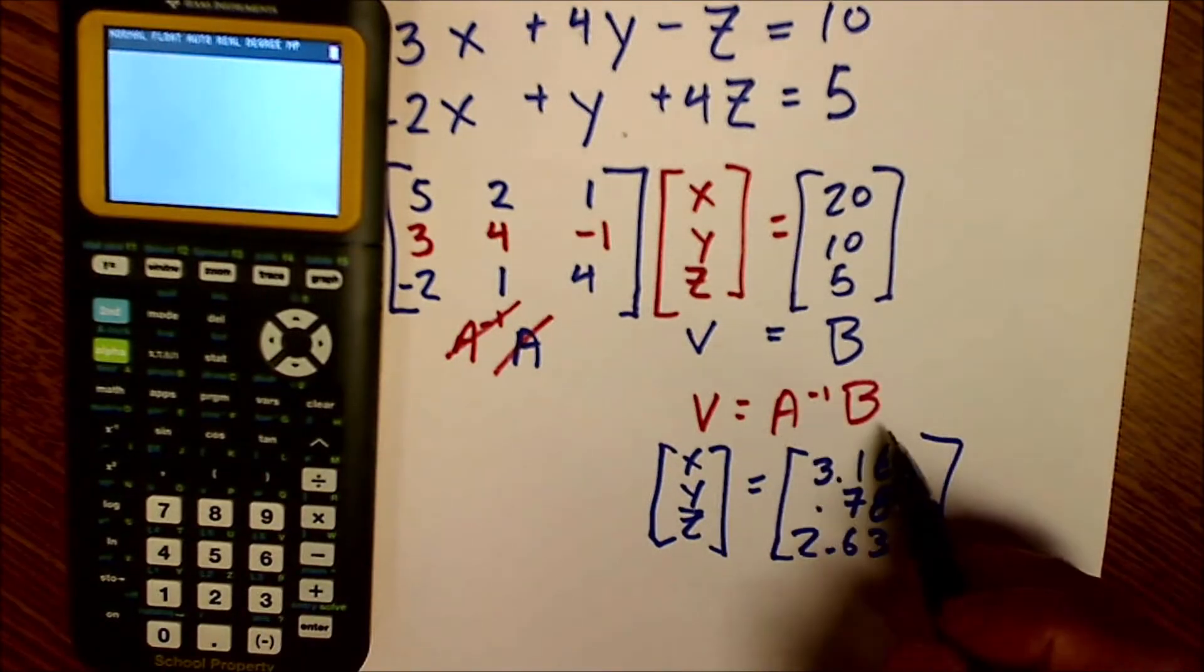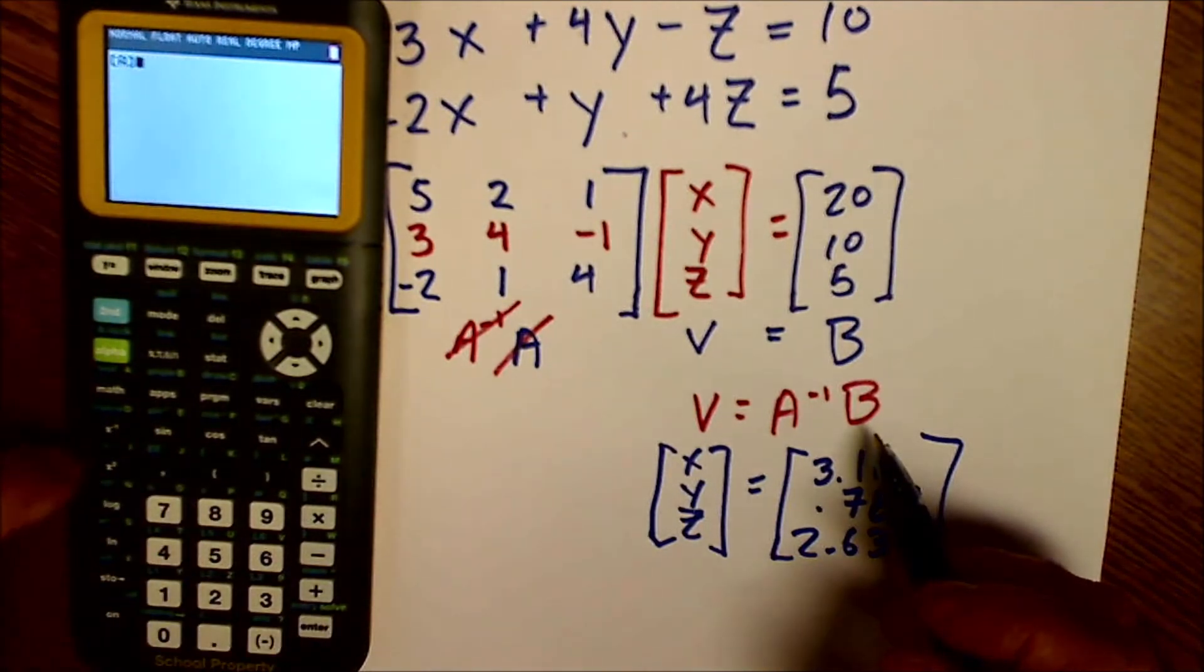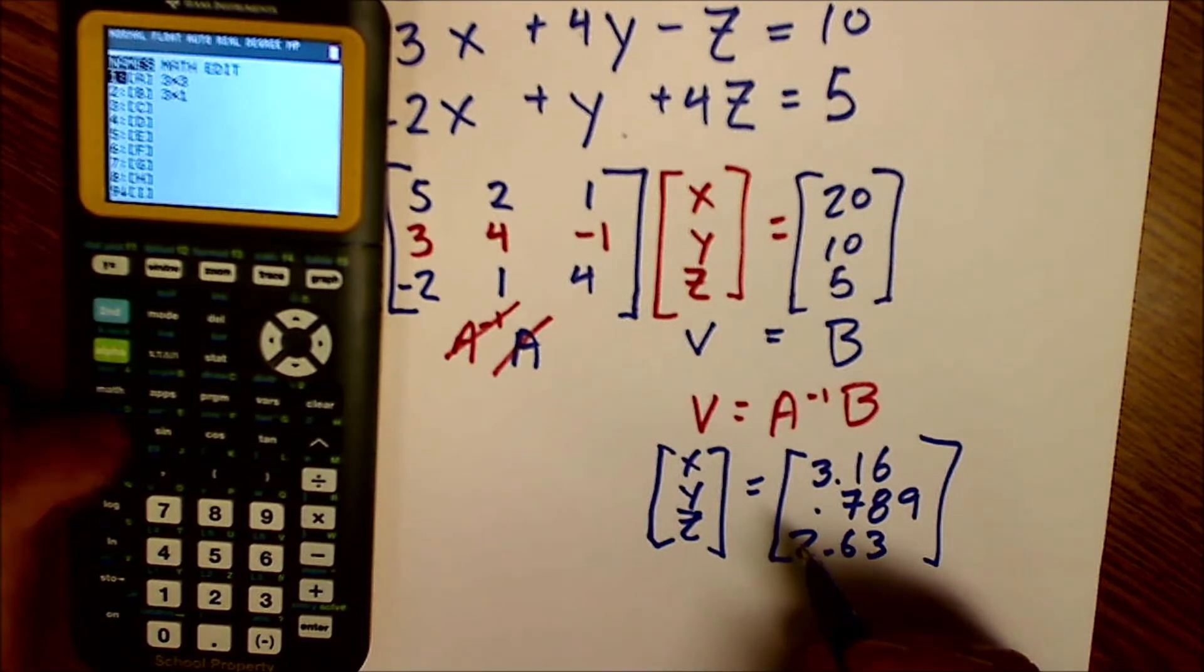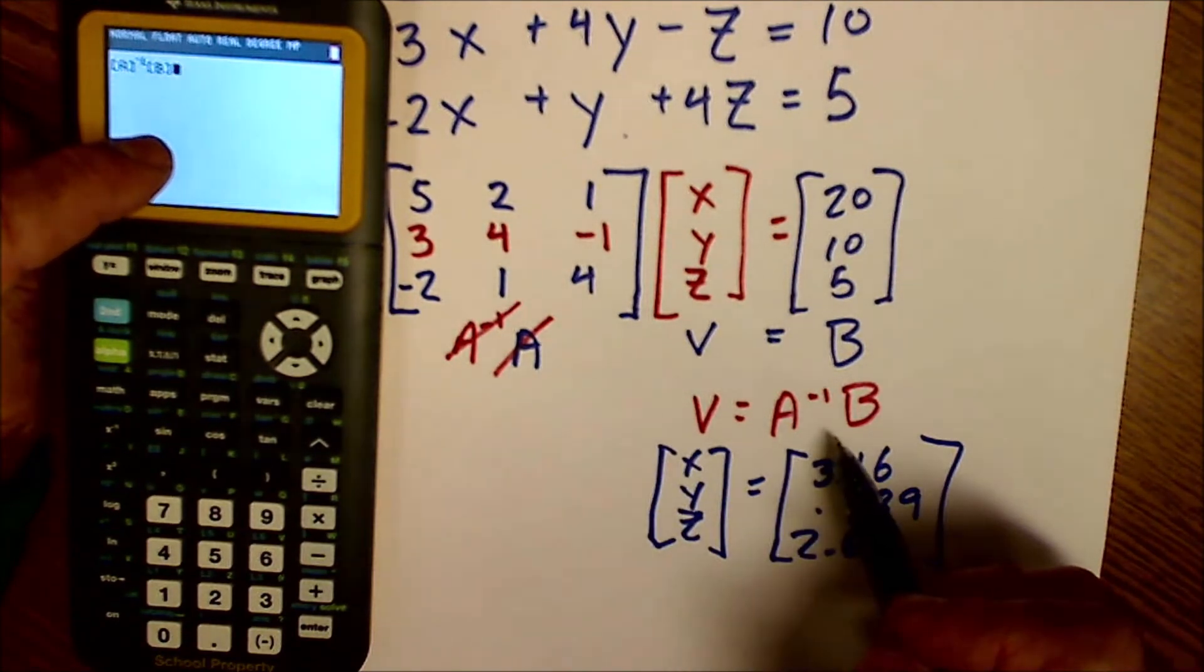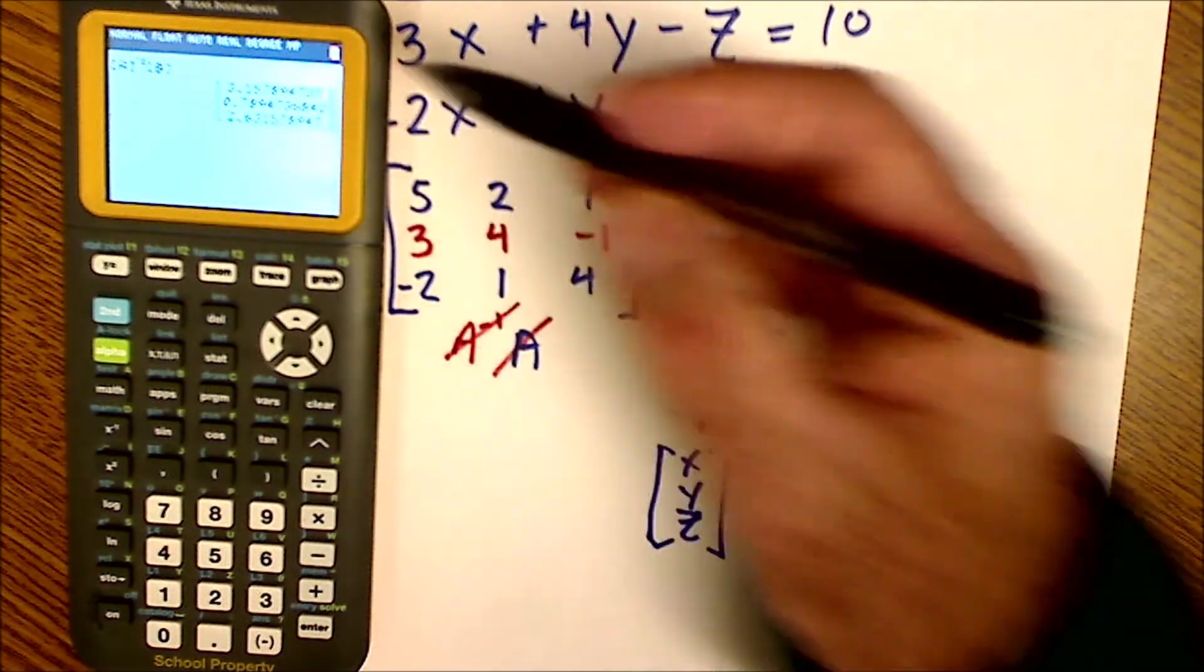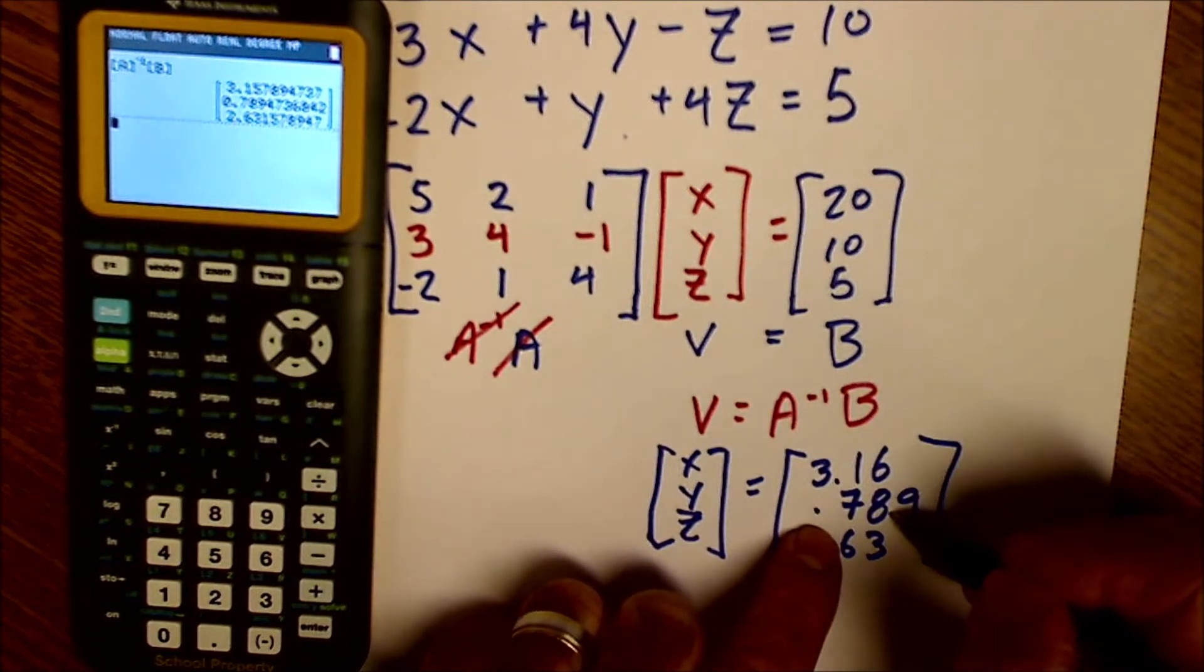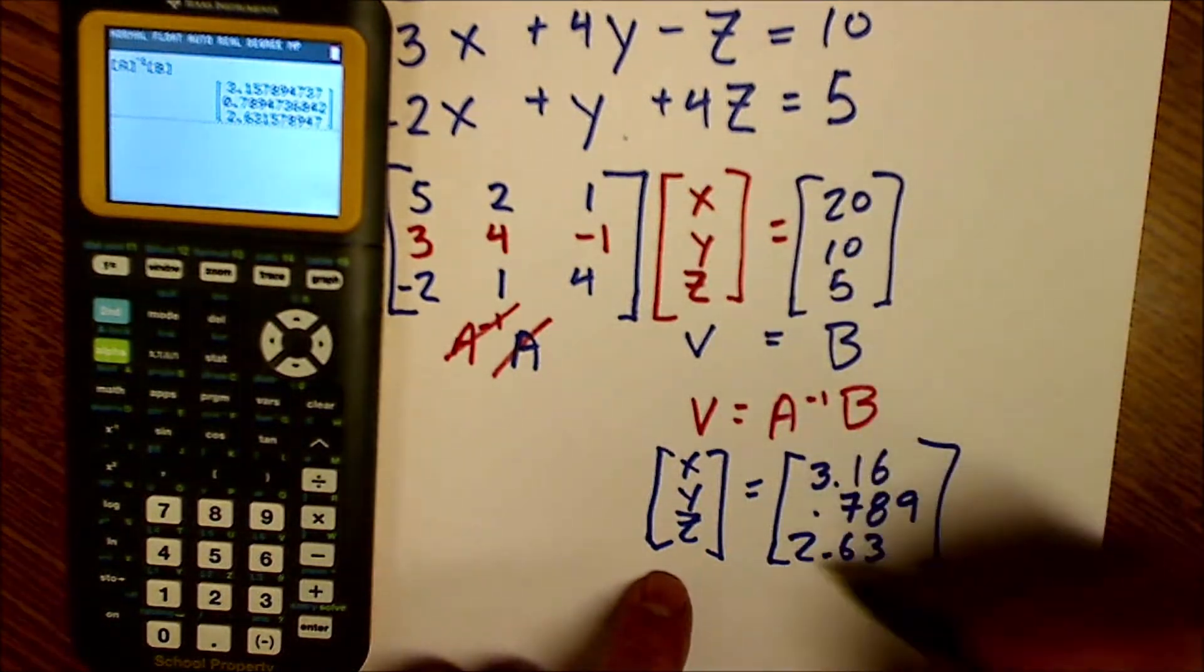Now I'll clear my screen. And now I want to take the inverse of A times B. So I'm going to go to matrix. I'm going to select A, enter. I'm going to use my inverse key right here. So the inverse of A times matrix two. So I have the inverse of A times B, like on my equation here. I'll hit enter, and it'll give me my solution matrix. So my solution matrix is 3.1578. I'll round it to 3.16, 0.789, 2.63.